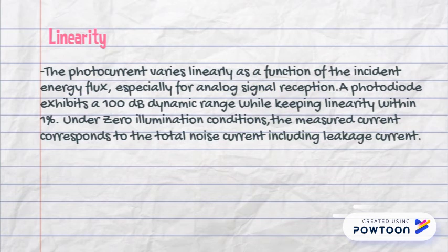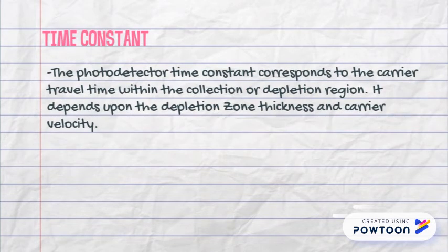Linearity: the photocurrent varies linearly as a function of the incident energy flux, especially for analog signal reception. A photodetector exhibits a 100 dB dynamic range while keeping linearity within 1%. Under zero illumination conditions, the measured current corresponds to the total noise current including leakage current. Time constant: the photodetector time constant corresponds to the carrier travel time within the collection or depletion region. It depends upon the depletion zone thickness and carrier velocity.